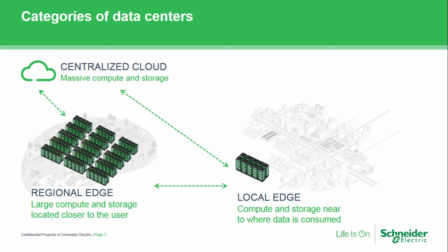For anyone who has streamed videos, you are likely using a local edge data center. These data centers live close to the point of use. When you're streaming a video, the last thing you want is buffering — you don't want that circle constantly going around waiting for more zeros and ones to get to your TV. You want a seamless, pleasant movie experience. Local edge is one of the solutions to bringing you that positive experience when you stream a video.